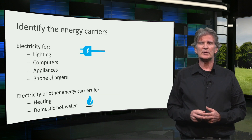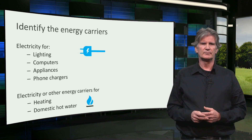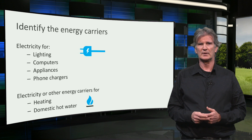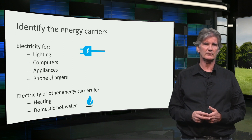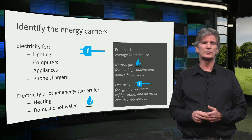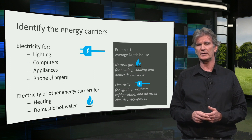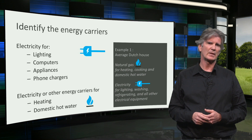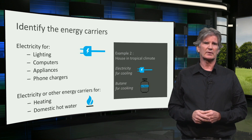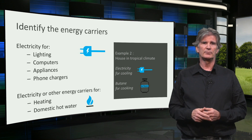Now you have to find which energy carriers are used for your building. The first one is always electricity — virtually every building uses electricity for lighting, computers, and other appliances. Sometimes electricity is the only energy carrier, but most of the time there is an additional energy carrier for heating and cooking. For example, an average Dutch house uses natural gas for heating, cooking, and domestic hot water, and electricity for lighting, washing, refrigerating, and all other electrical equipment. A house in a tropical climate might use electricity for cooling and butane gas for cooking.